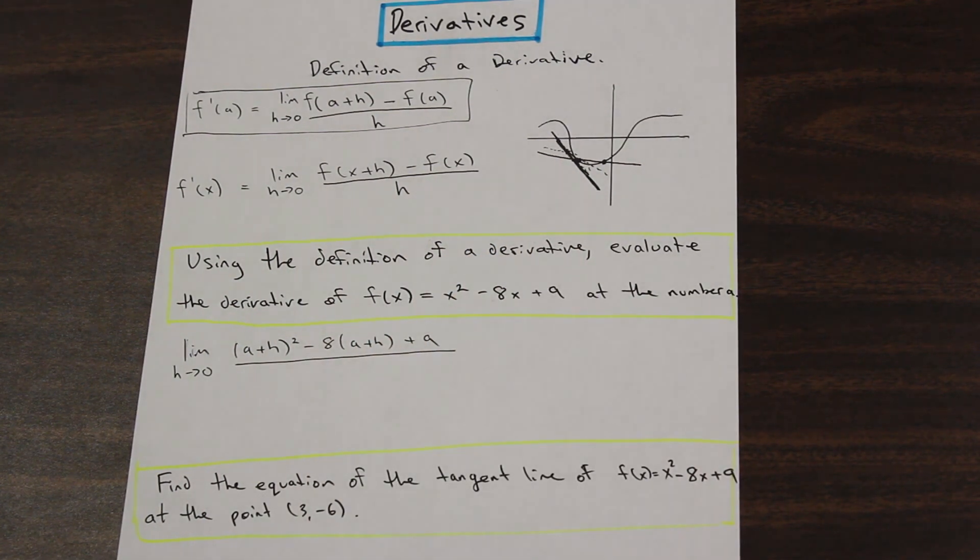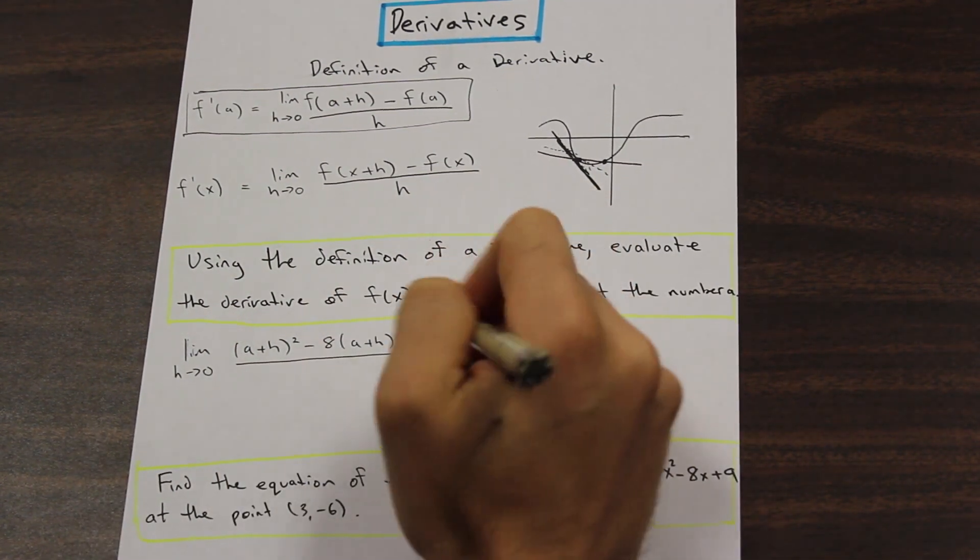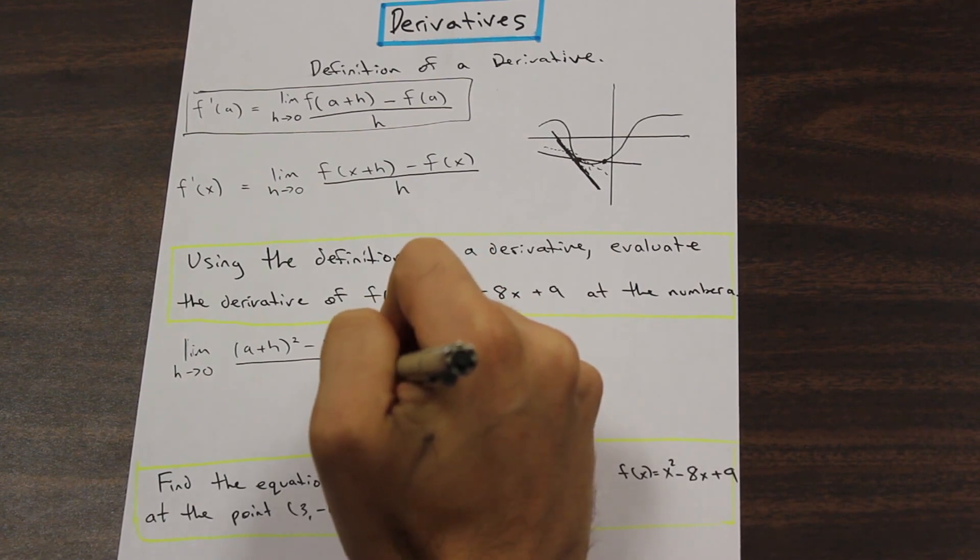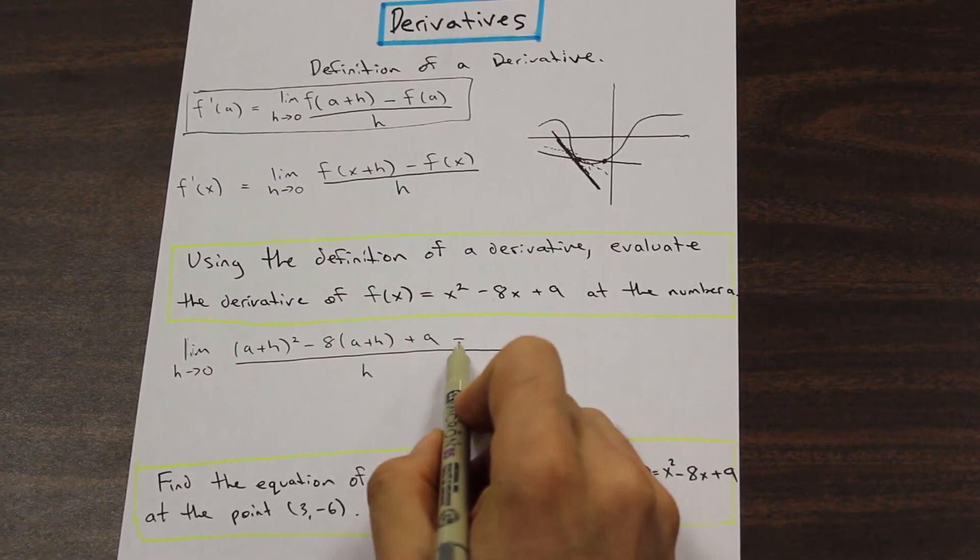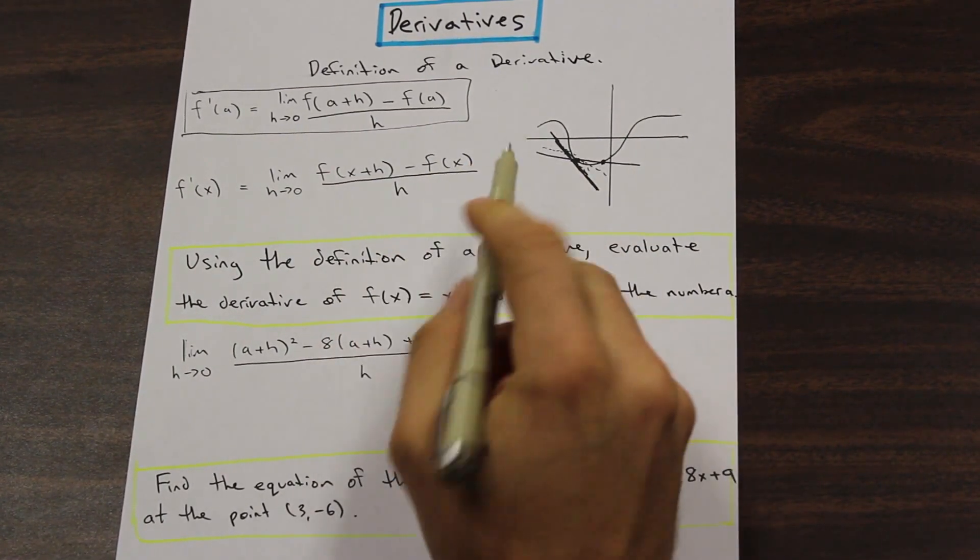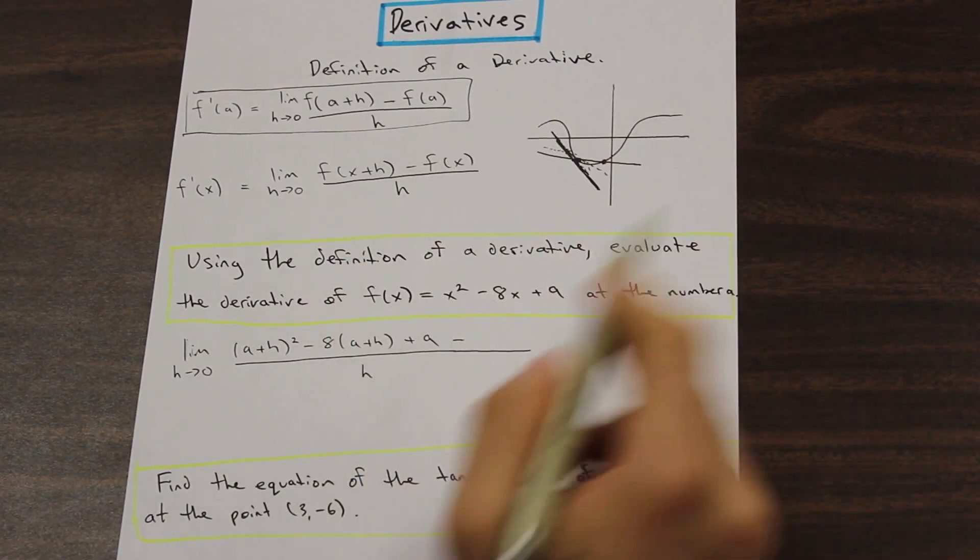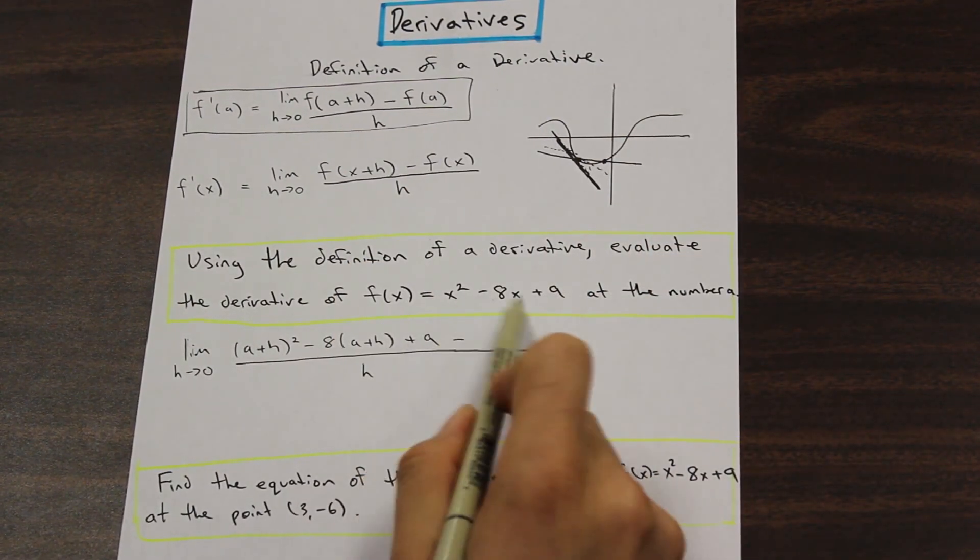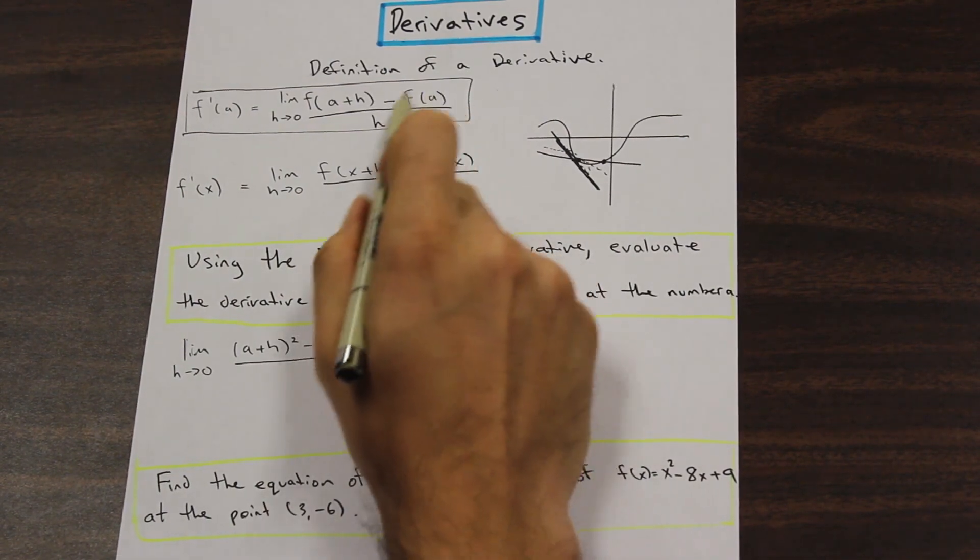So we have (a + h)² - 8(a + h) + 9. This is going to all be divided by h. And we have a minus here. And for every a that we have here, for every x that we have here, we're just going to plug in a.